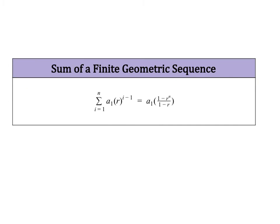Now we're going to start talking about how to find sums of a geometric series. There are actually two types of sums. The first is the sum of a finite geometric series, meaning it has a distinct endpoint — for example, the sum of the first 20 terms or the first 15 terms. The formula to find the sum of the first n terms is a sub 1 times 1 minus r to the n, all over 1 minus r.